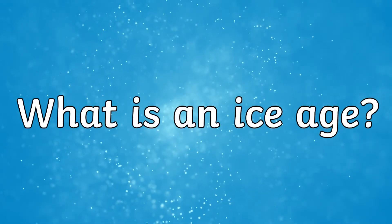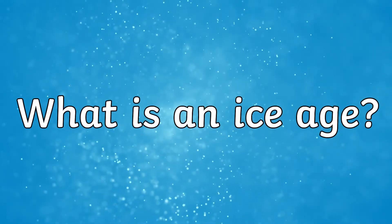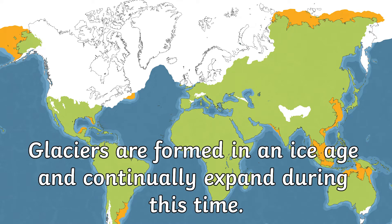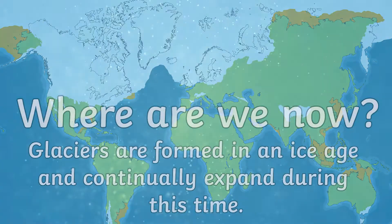So what is an ice age? An ice age is when temperatures all over the world are low and stay low for a long time. Glaciers are formed in an ice age and continually expand during this time.